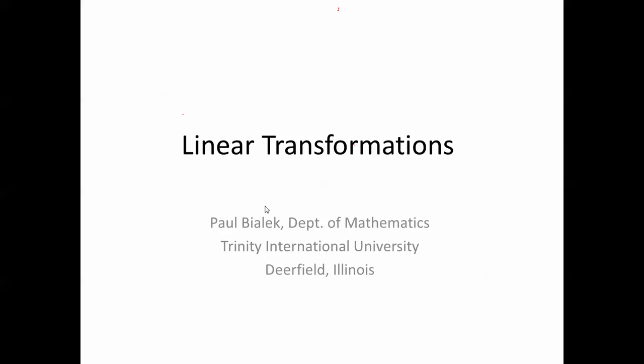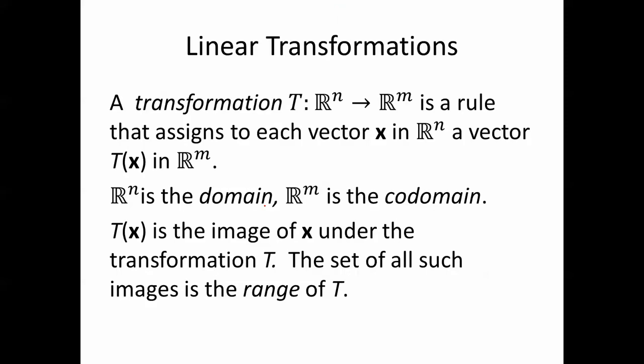Let's look at linear transformations. A transformation T from R^n to R^m is a rule that assigns to each vector x in R^n a vector T(x) in R^m. R^n is the domain and R^m is the codomain. T(x) is the image of x under the transformation T, and the set of all such images is the range of T.